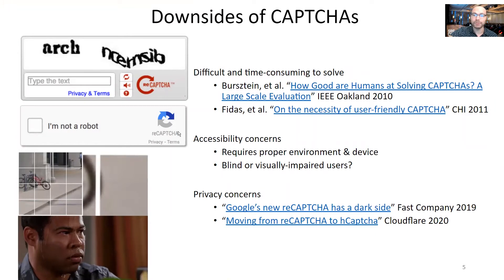Unfortunately, CAPTCHAs are annoying, they are time-consuming, and often difficult. Some take 30 seconds on average to complete. They also need proper equipment and environments to be correctly interpreted and answered, and they might lack support for blind or visually impaired users. Some schemes are more convenient than others and require much less user effort, but use client data such as cookies and browsing behavior, potentially invading user privacy.